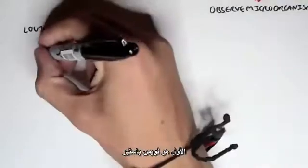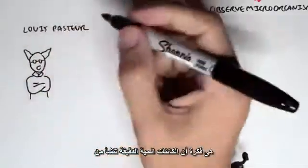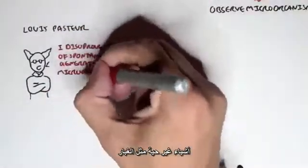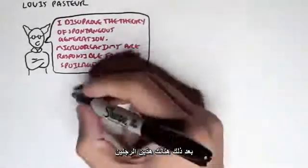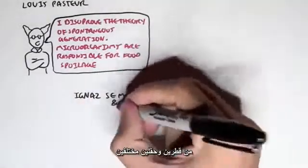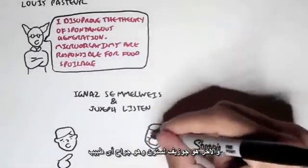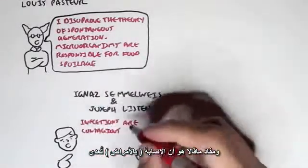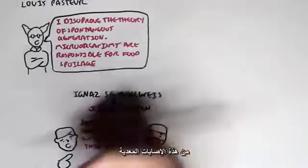Let's learn about some people important in the field of microbiology. The first is Louis Pasteur, who disproved the theory of spontaneous generation — the idea that organisms arise from non-living things such as dust. He also said that microorganisms are responsible for food spoilage. Then there are two other men from different countries and fields: Ignaz Semmelweis and Joseph Lister, who was a surgeon. They said that infections are contagious and proposed ways of preventing these contagious infections.